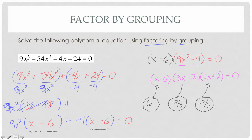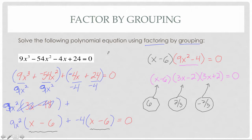You can check those by substituting in and calculating, or check it using a calculator. That's how you use factoring by grouping — we can use it on these bigger polynomials even if they have x cubed and x squared terms.